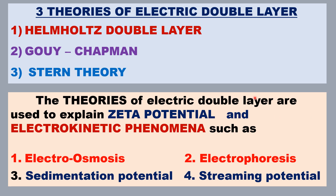These theories of the electrical double layer are used to explain the zeta potential across the double layer and electrokinetic phenomena such as electro-osmosis, electrophoresis, sedimentation potential, and streaming potential. These are advanced concepts you will study in B.Sc. and M.Sc.